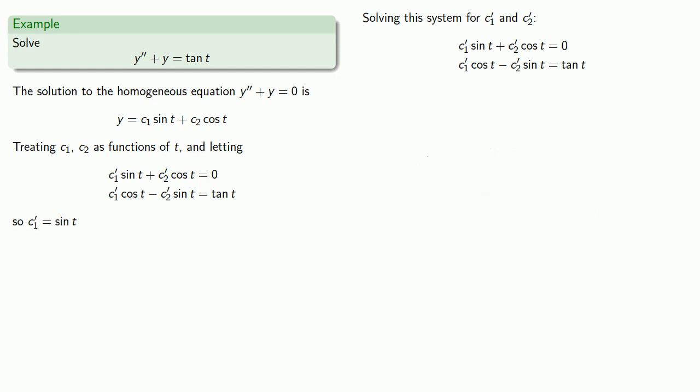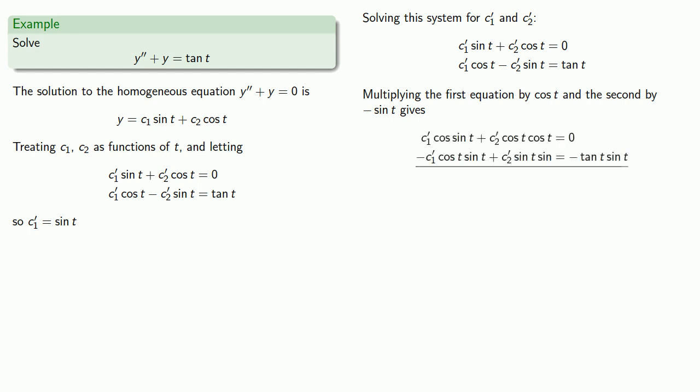Well that worked out so well, let's do it again. This time we'll multiply the first equation by cosine t and the second by minus sine of t. If we add them and simplify, we get c2 prime.